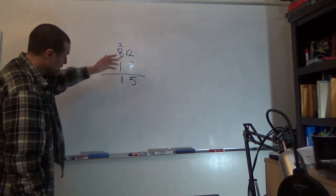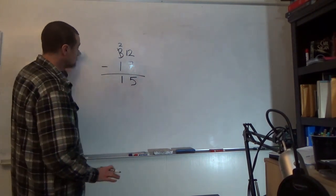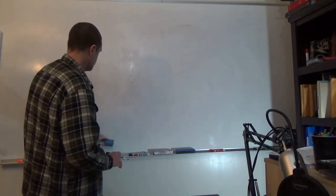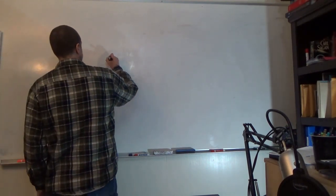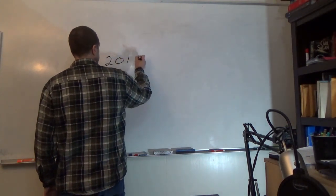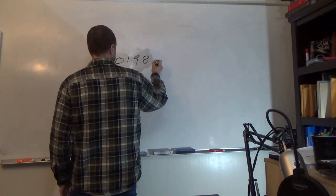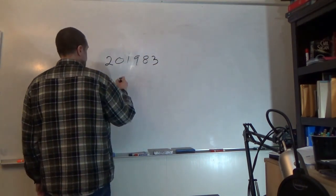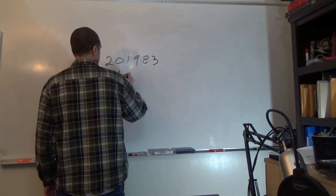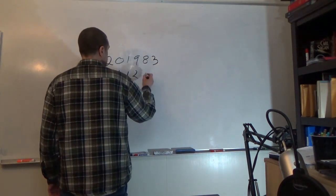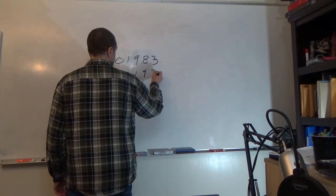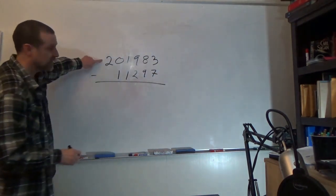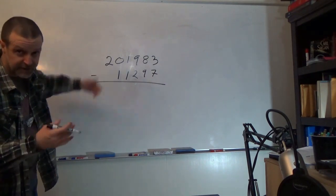And again we can do this with fairly large numbers. Let's take a large example. Let's say 201983 minus 11297. So the top number is bigger than the smaller number, so we can take the subtraction.